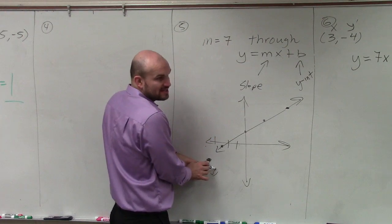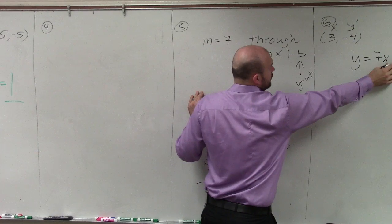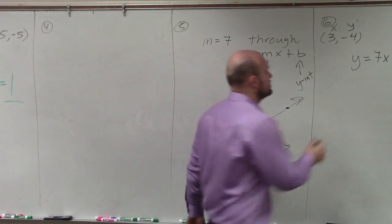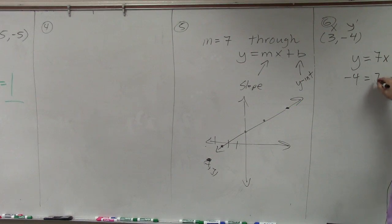Well, we can plug in our x and y point in for x and for y to solve for b, which represents where the graph crosses on the y-axis. So I'll do that. I'll put in negative 4 equals 7 times 3 plus b.